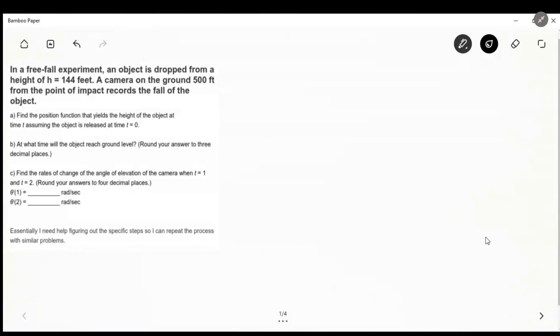Okay, so in this problem we're dealing with a free fall, and it gives us the height and a cameraman. Let's just look at part A for now. It's asking us for the position function that yields the height of an object at time t, assuming that it's released at time zero.